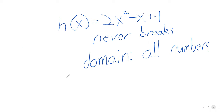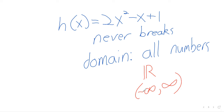One last piece of notation: all the numbers. Sometimes you'll see all the numbers represented by a funky-looking R. Other times you'll see this as all numbers greater than negative infinity but less than positive infinity. So if asked to use interval notation for all real numbers, this is how you do that — open parenthesis negative infinity comma positive infinity close parenthesis.